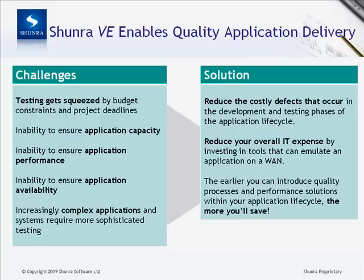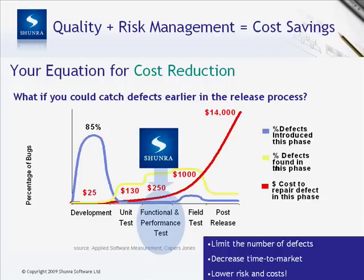Shundra would like to offer you the solution to all of these challenges. Shundra VE tests network impact before deployment and reduces costly defects that occur in the development and testing phases of the application development lifecycle. If you deploy best practices for quality and risk reduction, Shundra has evidenced that you won't spend a fraction of the cost fixing application issues post-development. What if you could catch defects earlier in the development process? This chart shows how costly it is to fix errors late in the process — over 14 times more expensive if you deal with these issues after a rollout.